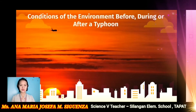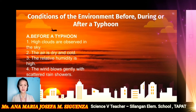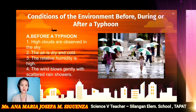Let us proceed to the condition of the environment before, during, and after the typhoon. These are the things that we experience before a typhoon: we can observe high clouds in the sky, the air is dry and cold, the relative humidity is high, and the wind blows gently with scattered rain showers. Everyone may be using an umbrella because of scattered rain showers in the area.